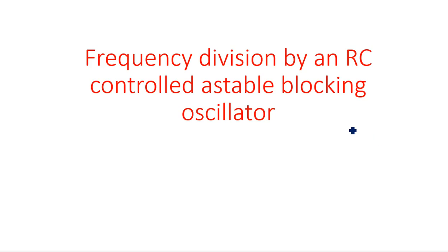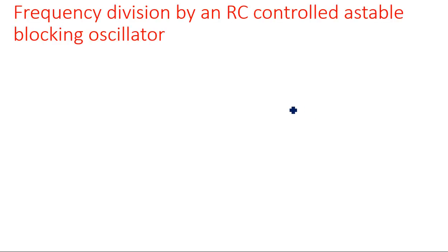In this video I'm going to explain about frequency division by an RC-controlled astable blocking oscillator. In the previous video I explained how 1:1 and 1:3 or 1:4 frequency division can be obtained. For 1:1, we assume tp is less than t0, and for 2 or 3 times we assume 2·tp or 3·tp is less than t0, depending upon the type of frequency division and synchronization.